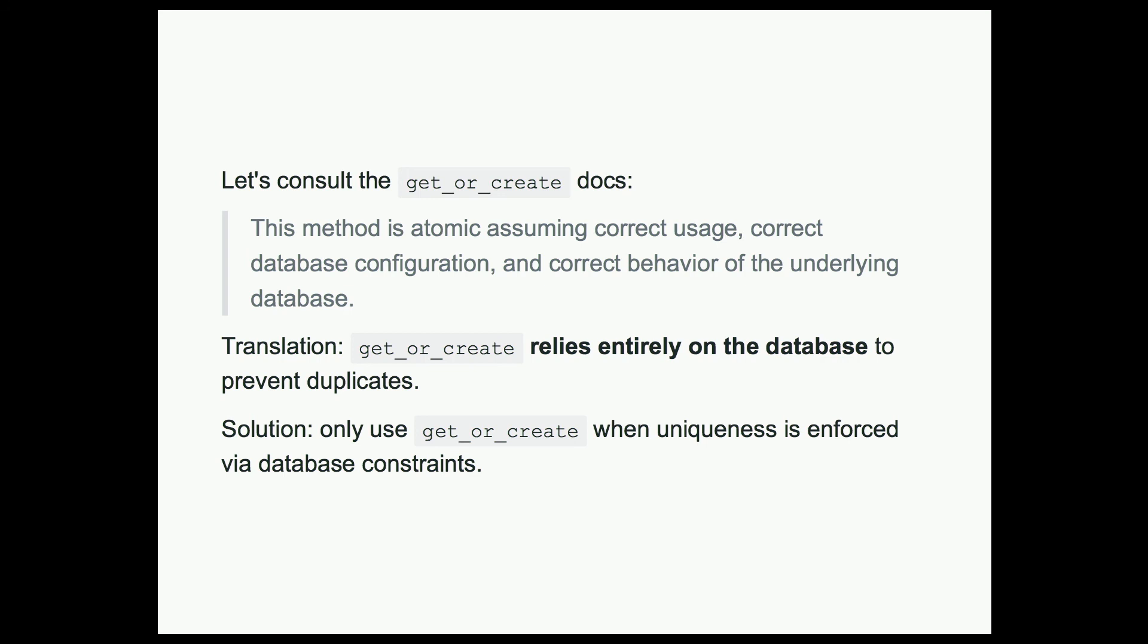Get or create actually relies entirely on the database to prevent duplicates. It just does some exception fallback handling for you. So only use get or create or update or create when uniqueness is enforced via database constraints.